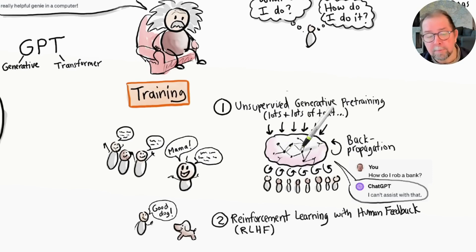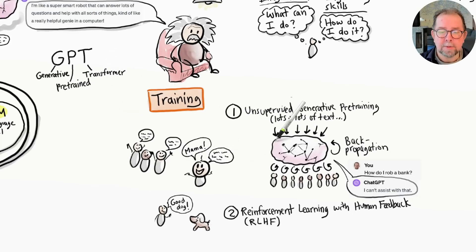When training is done, the model is mostly frozen, other than some fine-tuning that can happen later. That's what the P stands for in GPT: pre-trained. Although in the future, we will probably have models that can learn continuously rather than just during training and fine-tuning.